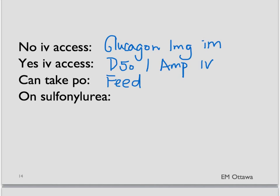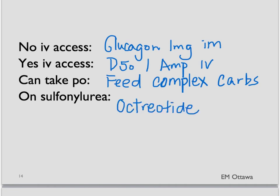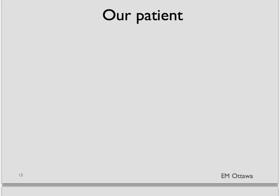Examples such as sandwiches, bananas, crackers, etc. If the patient is on a sulfonylurea, sometimes you may find that the blood sugar does not go up; we can give octreotide to reverse the sulfonylurea first. Back to our patient: because he has a fairly decreased level of consciousness, we've decided we cannot feed him and we happen to have IV access, so we decided to give him one amp of D50 solution and he promptly wakes up.